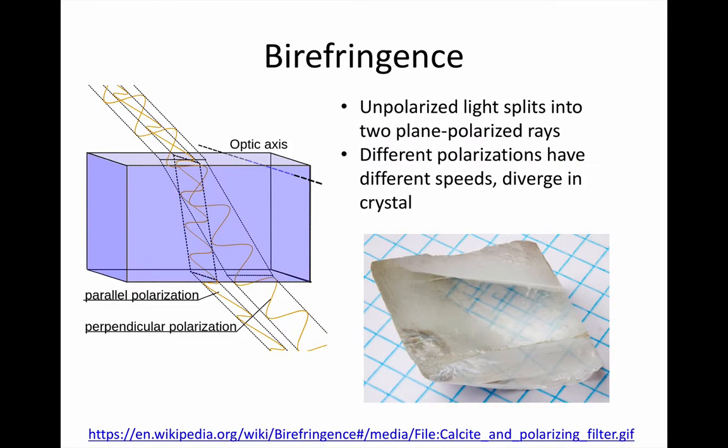This is how it works. Unpolarised light comes in and gets split into two different polarisations that have slightly different speeds and take slightly different paths.